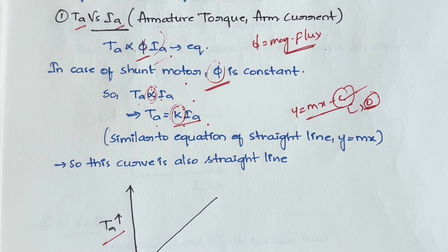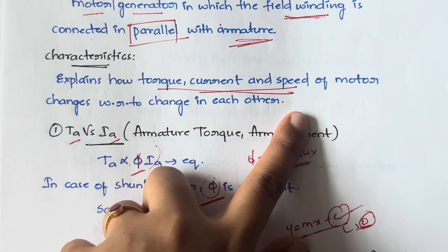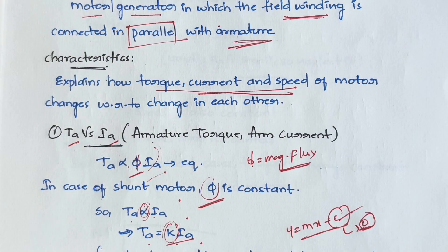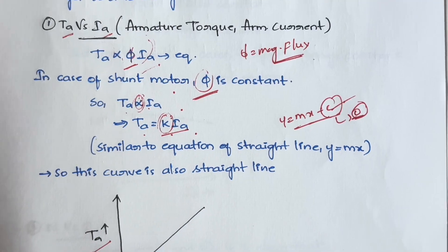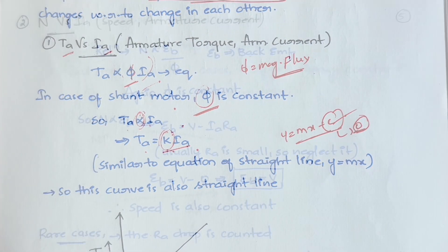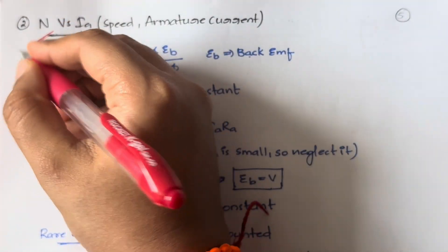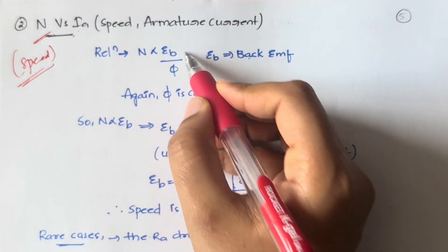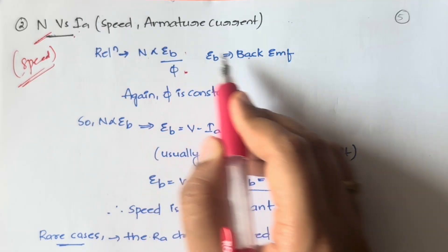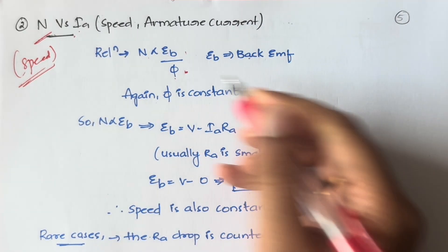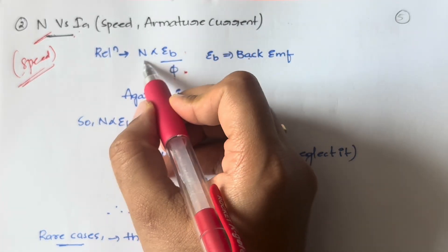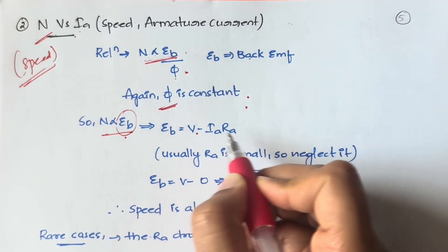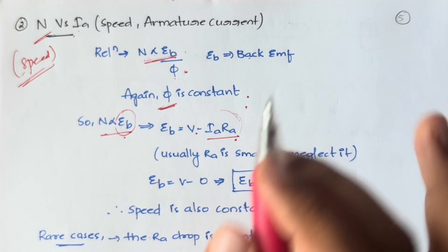We have seen torque versus current. Now let's look at speed versus current and speed versus torque. Next is N versus Ia — speed versus armature current. We know that N is directly proportional to Eb divided by φ, where Eb is the back EMF. Again, in a shunt motor φ is constant, so N is directly proportional to Eb. And Eb equals V minus Ia·Ra.